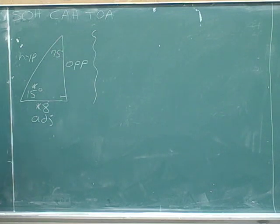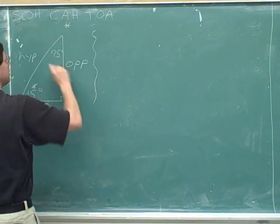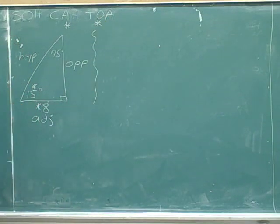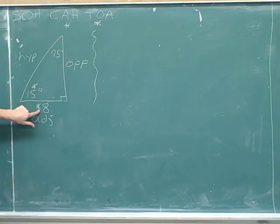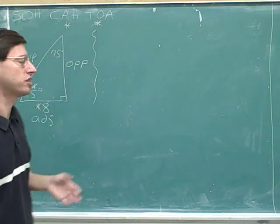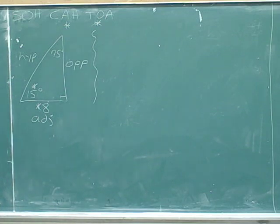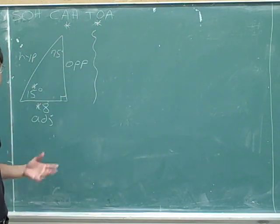In this problem we were given information about the adjacent side, so we're going to use trig functions that refer to the adjacent side. We can use the cosine, because that refers to the adjacent side, and we can use the tangent, because that also refers to the adjacent side. It wouldn't be helpful to use the sine because that doesn't refer to the adjacent side — we wouldn't be able to use the number 8. If you're having trouble, just write down SOHCAHTOA, and use asterisks to indicate the functions you plan to use.